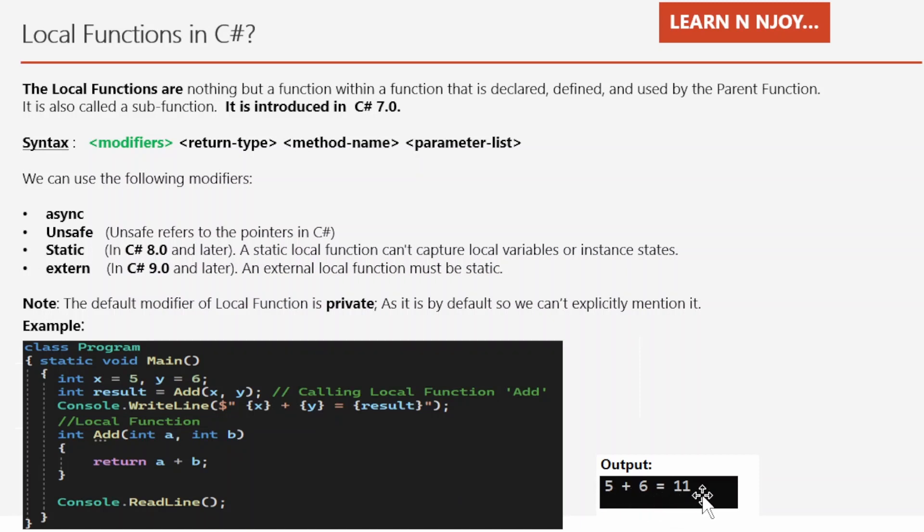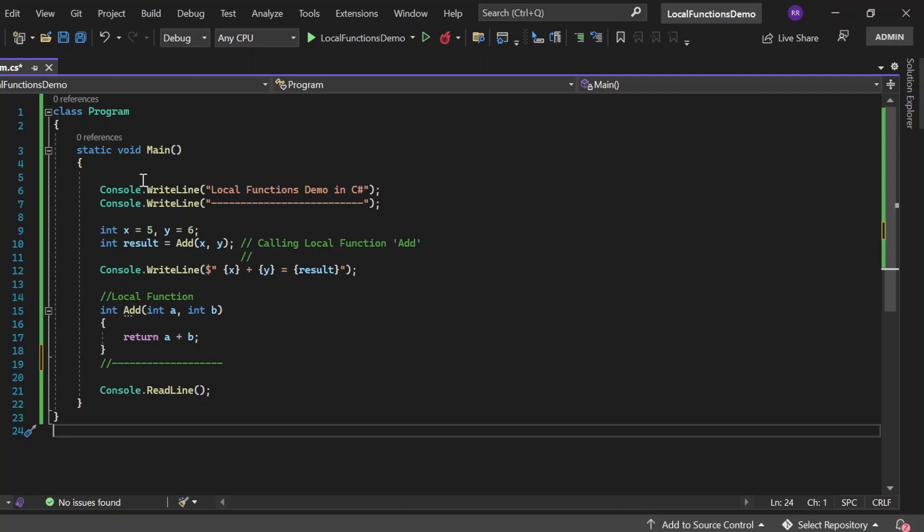So here we are in Visual Studio. We have written one class Program, inside that there's a main method. We've written these two console.WriteLine statements that say I'm giving the demo of the local function in C#.